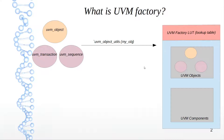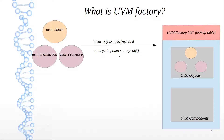Once you do this, your objects will get registered in the factory. For the constructor of the class, you want to make sure it calls the parent constructor `new` with the argument `name`, which is of type string. This name corresponds to the class name you have chosen.